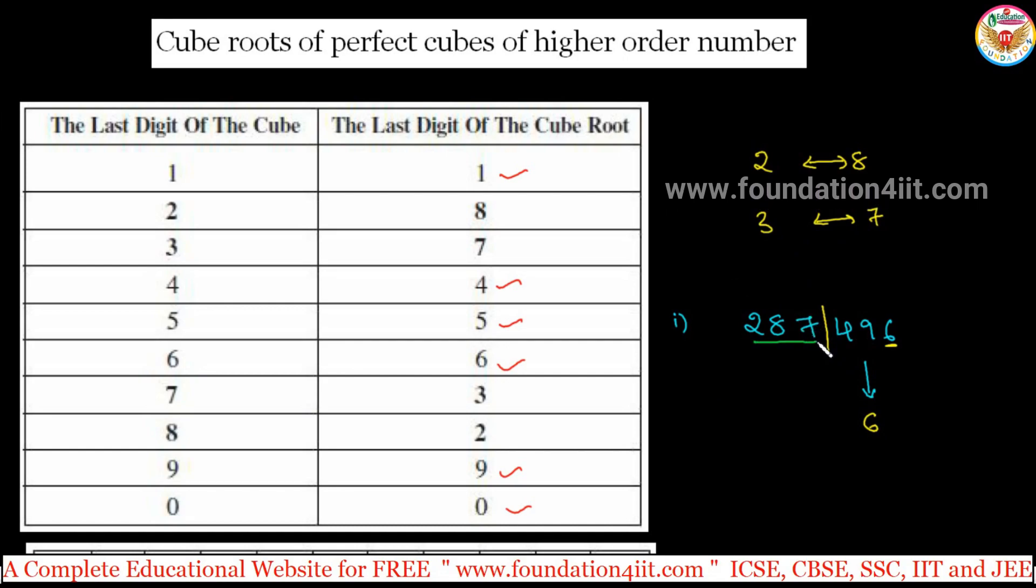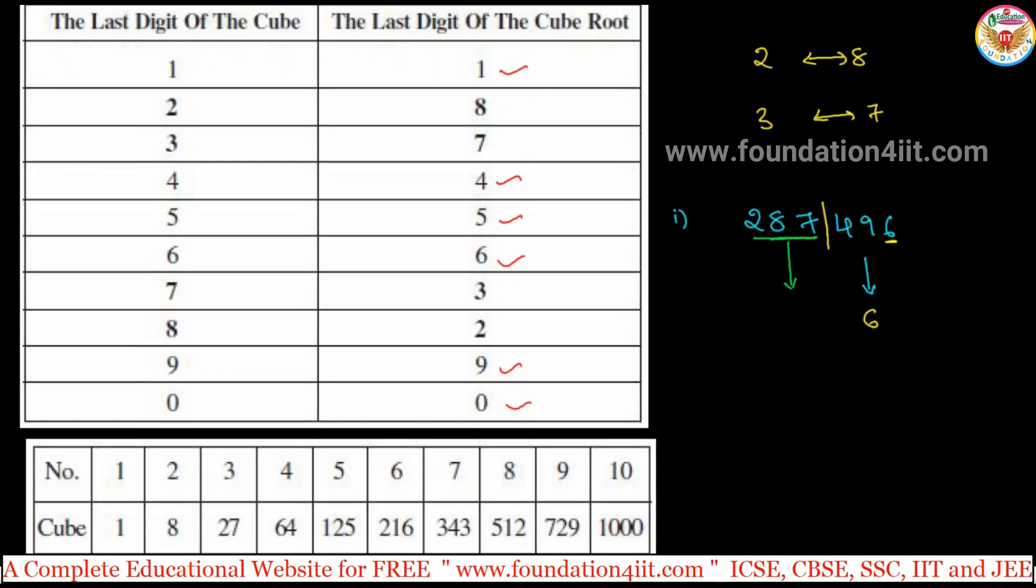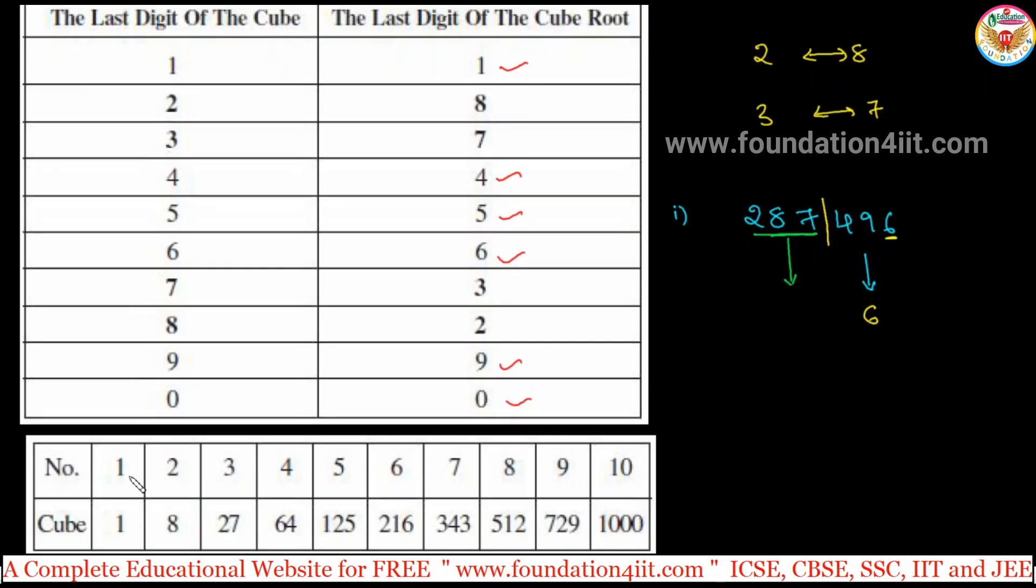Next, 287 is nearest to which perfect cube. Already you studied till 10th cube. Scroll down, here is the example: 1 cube is 1, 2 cube is 8, 3 cube is 27, 4 cube is 64, so on. 287 is near 343, which is more than 287. Just less is 216. 216 means 6 cube is 216, only take 6. So 66 is answer.